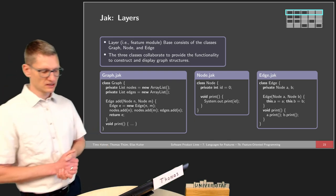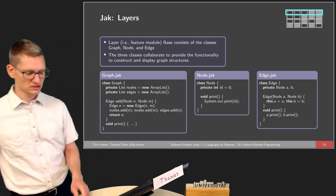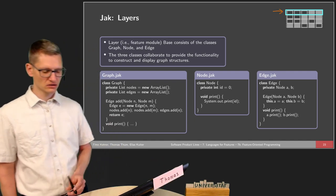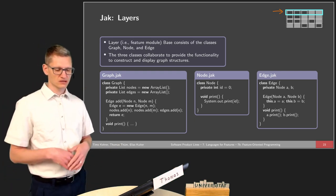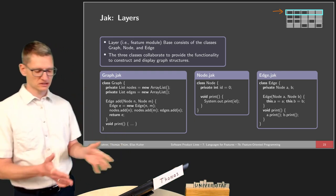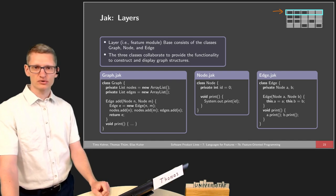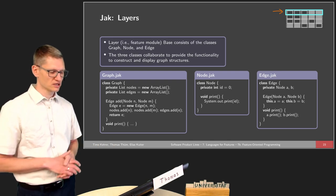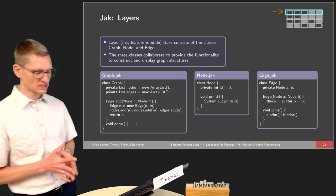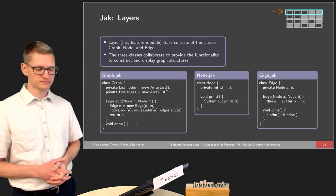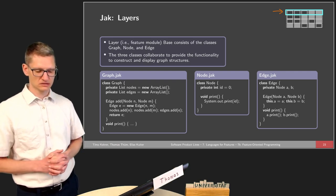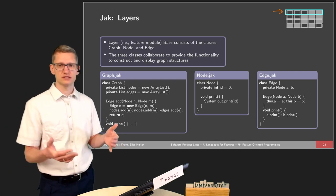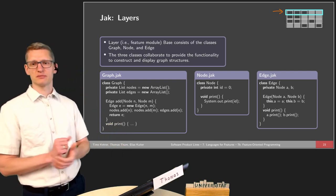Looking at how a layer is structured, we have three files: graph.jag, node.jag, and edge.jag. These three classes are basically standard Java classes, and together they provide the functionality of the collaboration — the base implementation of the graph.